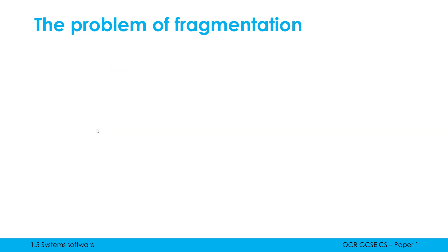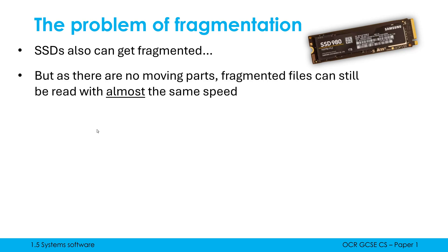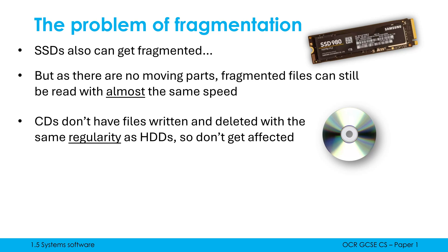It's important to realize this is only really a problem for hard drives because they have moving parts. SSDs are used a lot now as secondary storage and can also get fragmented, with files getting split up especially as they near capacity. But because nothing is moving inside an SSD, we can still read fragmented files with almost the exact same speed as if they were stored together. CDs are optical storage and do have moving parts, however a CD doesn't really ever have this issue because we're never going to be using a CD as secondary storage with the same regularity of writing and deleting as a hard drive. So fragmentation only really affects hard drives.